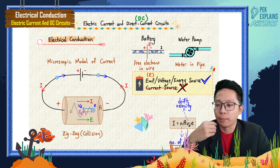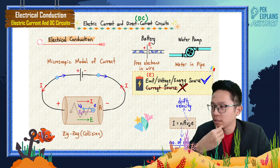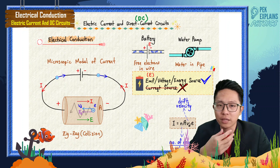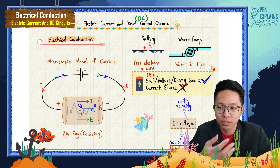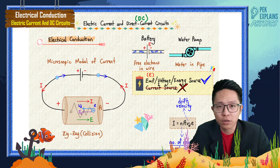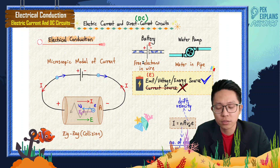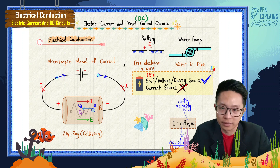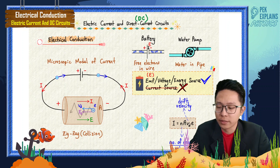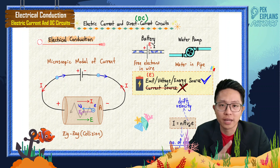If you say that battery provides current to the circuits, then if you use a non-conductor, there should be current because there's a battery — which is wrong. If it's a non-conductor, the wire does not have free electrons. So for a non-conductor, there's no current, although there's a battery. So battery provides EMF; battery does not provide current.